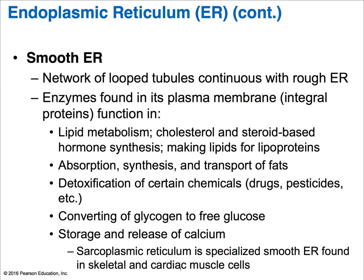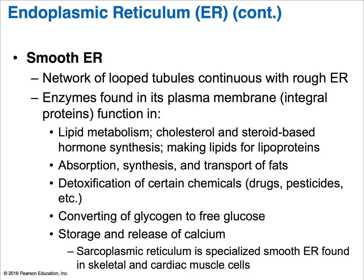In the liver, you'll find a lot of smooth ER as well. Going back to the rough ER, you'll also find a lot of rough ER in liver cells. In addition, secretory cells have high amounts of rough ER, and antibody-producing plasma cells also tend to have a lot of rough ER.